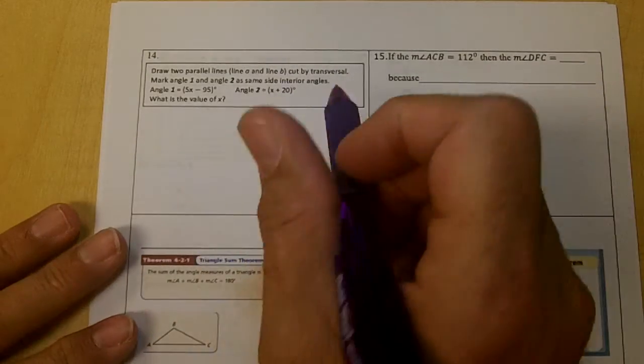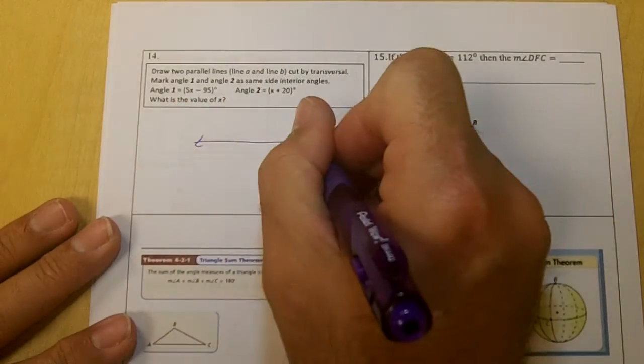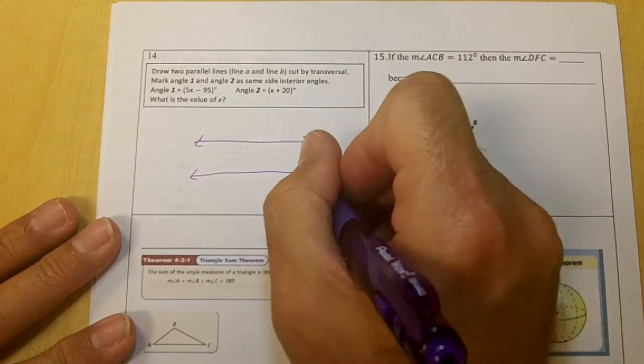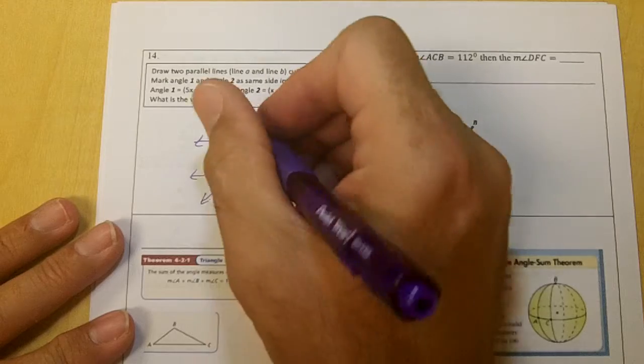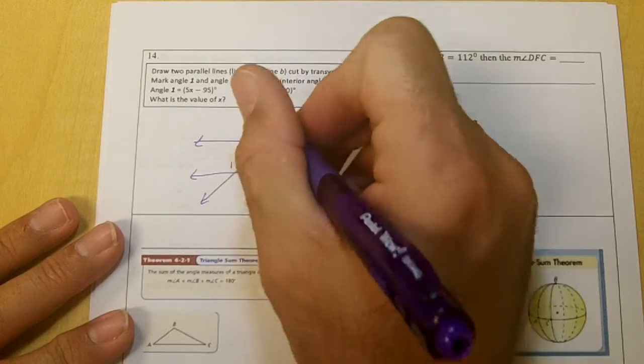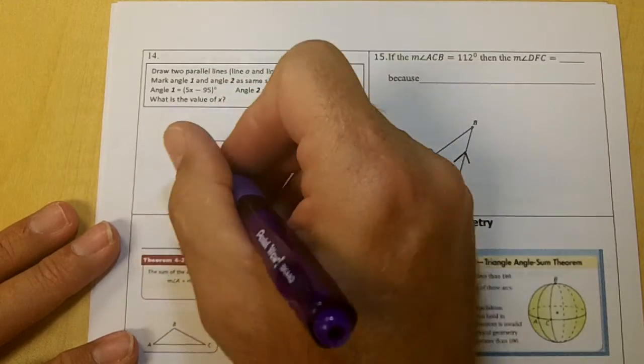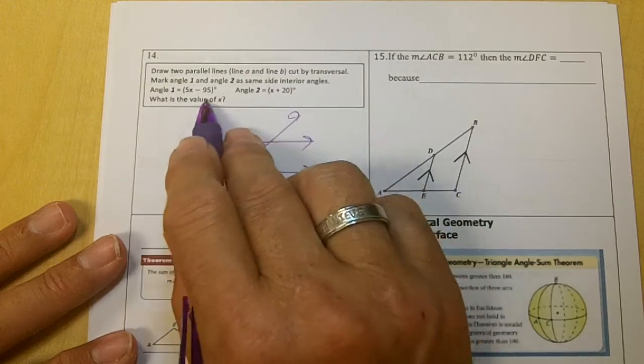Number 14, draw two parallel lines A and B cut by a transversal. Mark angle 1 and angle 2 as same side interior, so 1 would be here, 2 would be here. Angle 1 is 5x minus 95, and angle 2 is x plus 20.